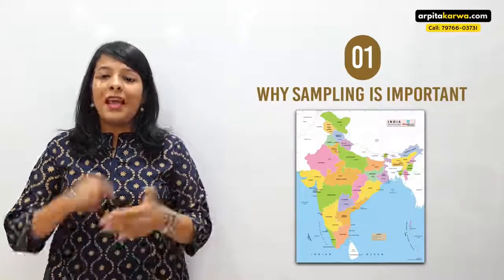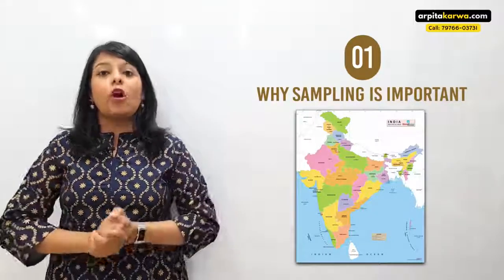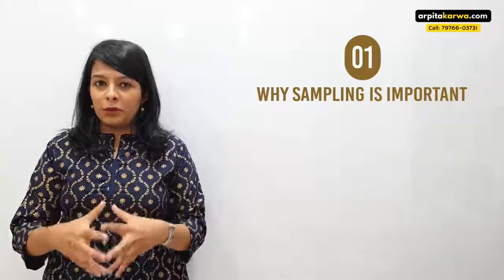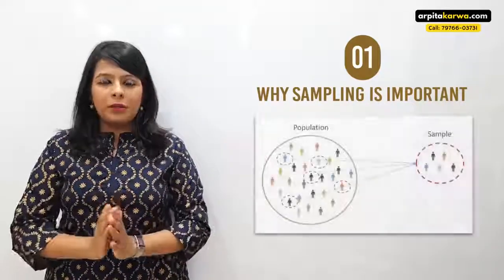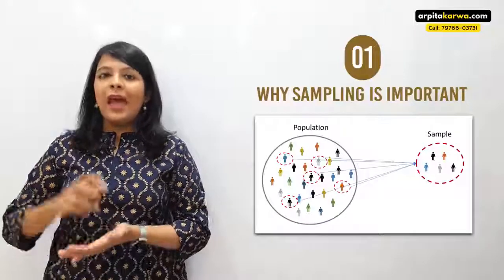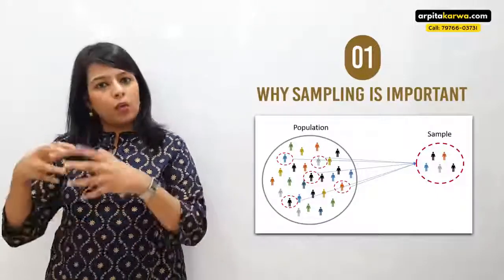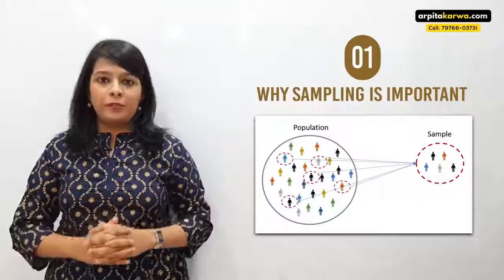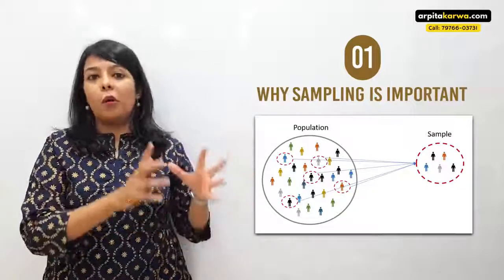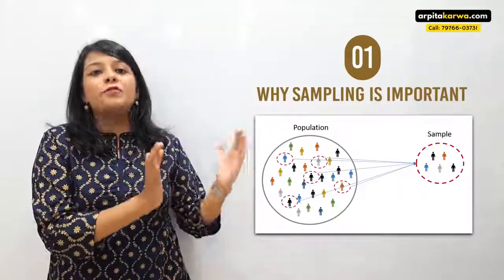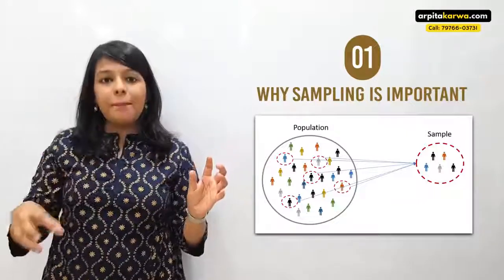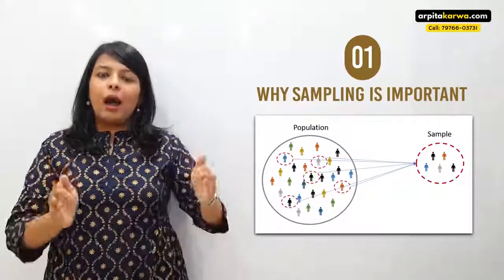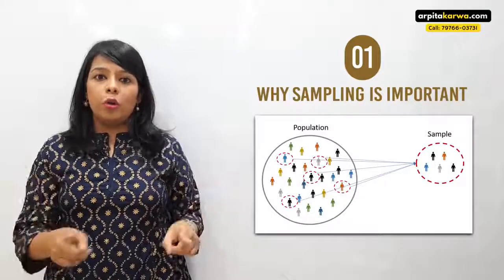I cannot go to all 135 crore people and note down their heights. So what I do to make my research simpler is randomly choose a thousand people from those 135 crore, note down their heights, conduct my research on them, and then generalize the result to the entire 135 crore. This group of 135 crore people is known as the population, and the group I select from them is known as the sample.